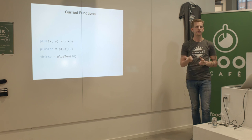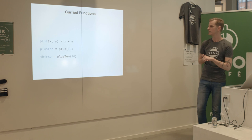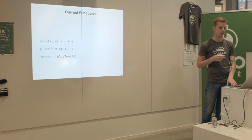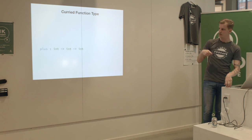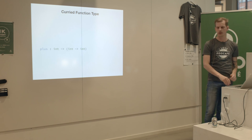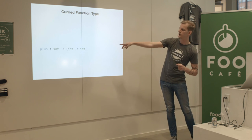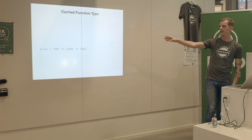If you look at Haskell, it doesn't have variadic functions either - there's a trick for doing something that looks like variadic functions. Looking at the type of a curried function like plus: it takes an int and an int and returns an int. With extra grouping for clarity, it's actually a function taking an int and returning another function that returns an int. These are the same type written two ways.